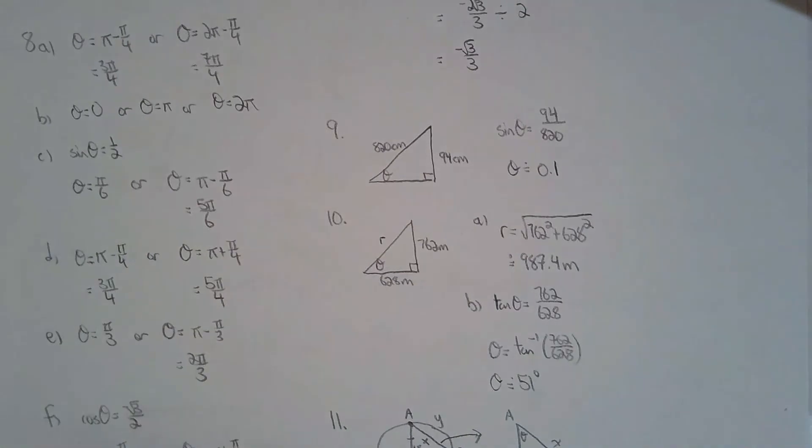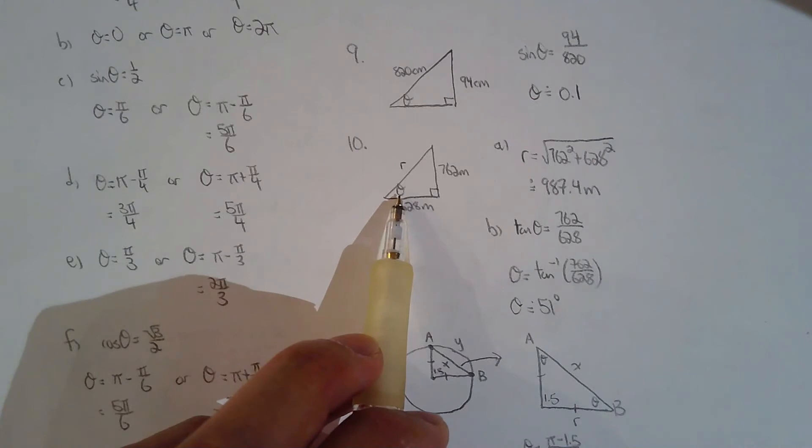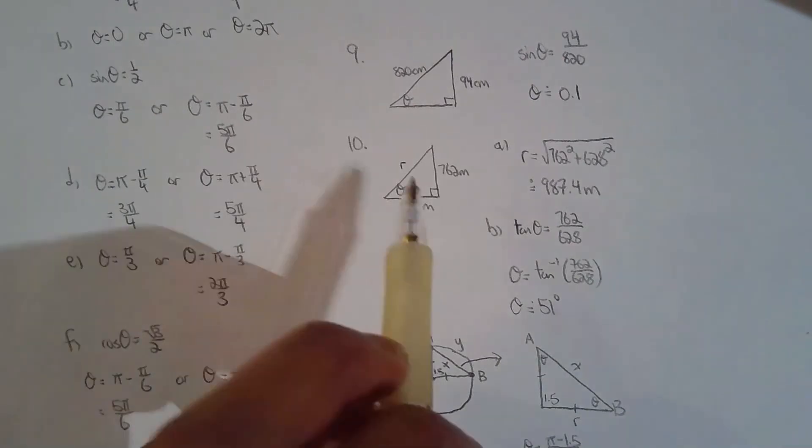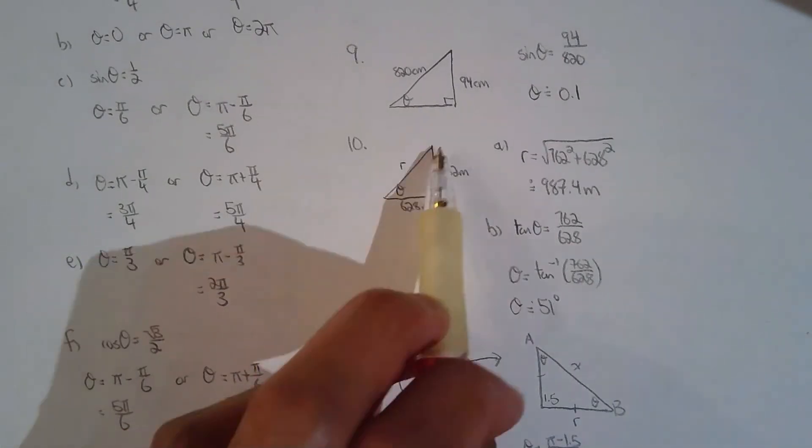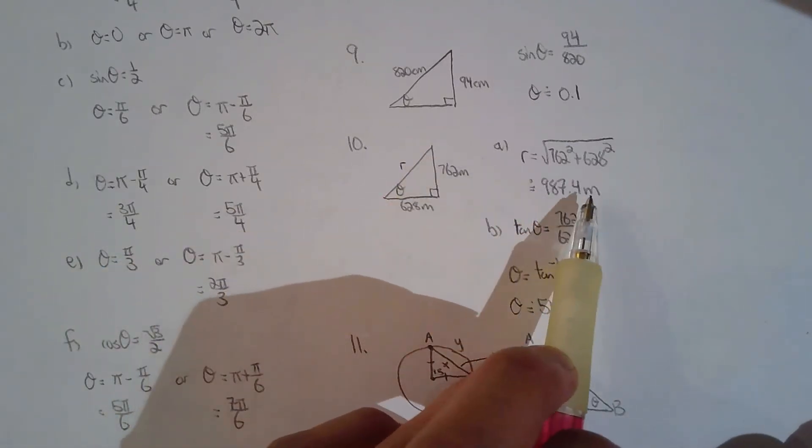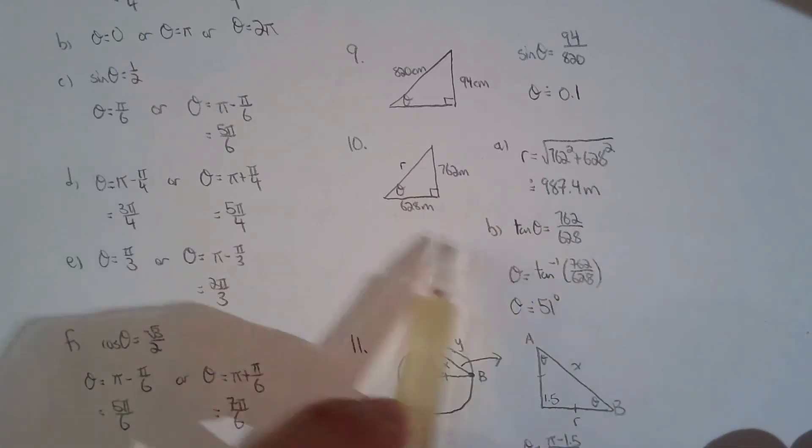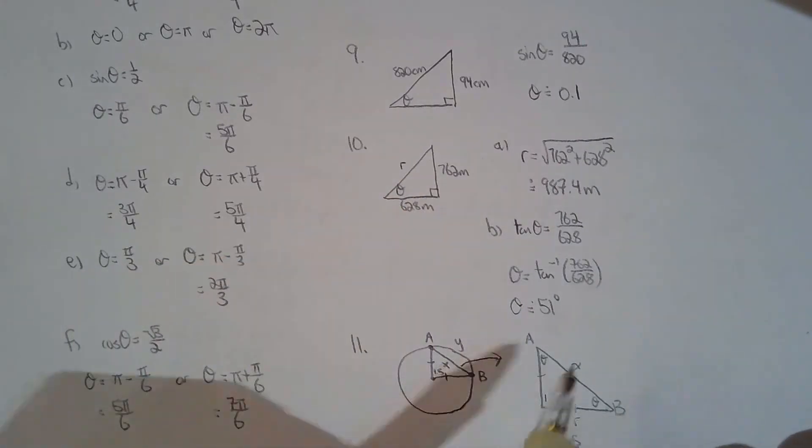For ten I'm missing the length of the ramp. Oh sorry, this is a cable car, how long is the ride? So solve for what I've labeled as r. The ride is about 987.4 meters using Pythagorean theorem. To solve for this angle I chose a tan ratio because opposite over adjacent, and inverse tan gives me 51 degrees above.